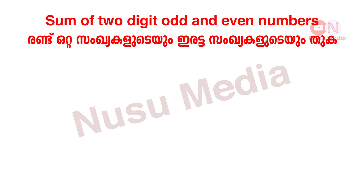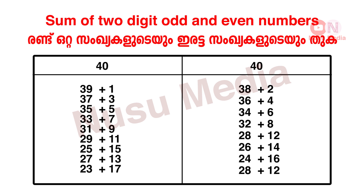Let's find pairs that sum to 40. 39 plus 1, 37 plus 3, 35 plus 5, 33 plus 7, 31 plus 9, 29 plus 11, 25 plus 15, 27 plus 13. All these pairs of odd numbers sum to 40.